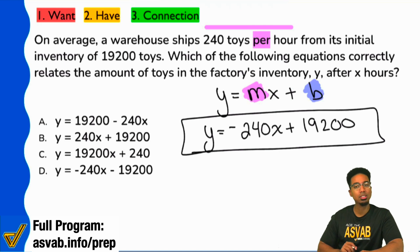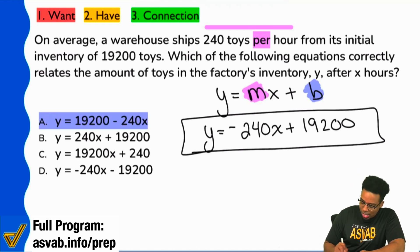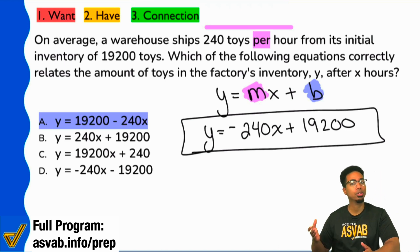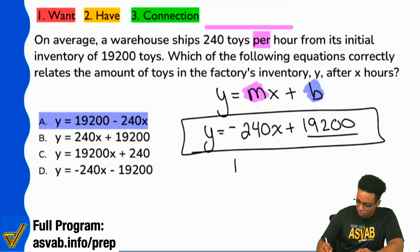...only because we just swapped it. Again, one plus two is the same as two plus one, so you could write the 19,200 first and then you could write the minus 240x after. Absolutely.